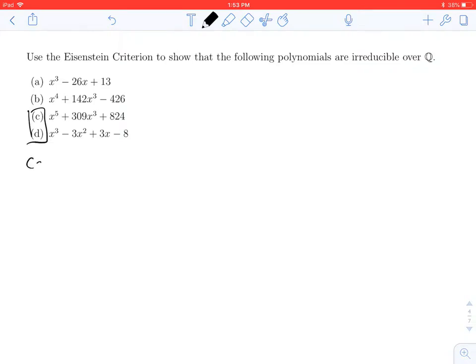Problem C is going to be very similar to A and B. The only tricky thing is you have to identify the prime, and it may not be as obvious. If we do a prime factorization of 309, we get 3 times 103.